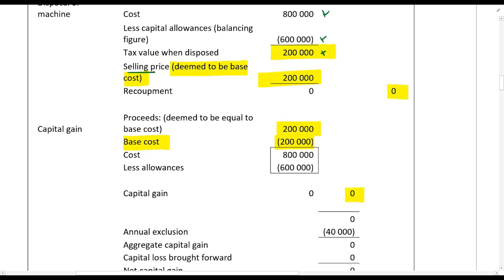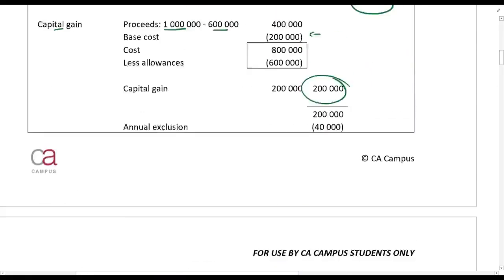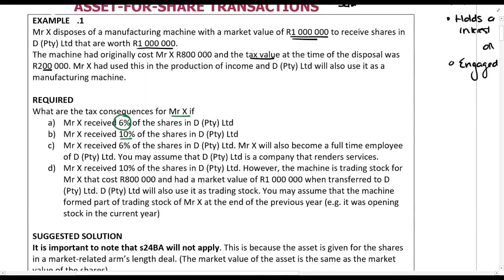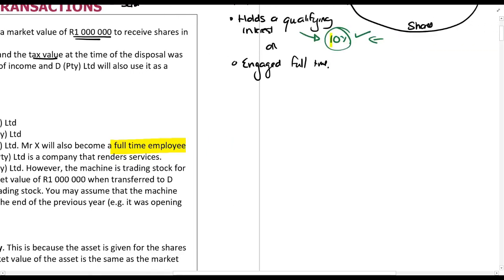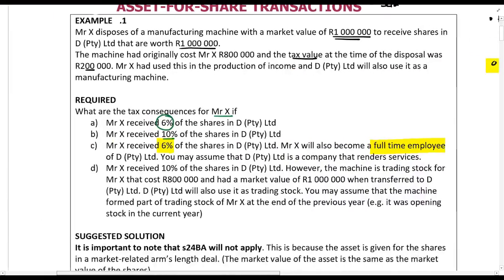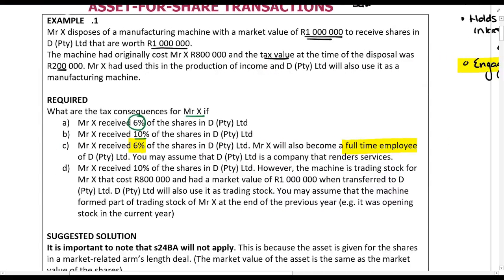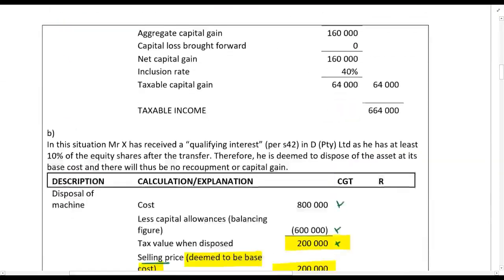Comparing parts A and B: in A there is a 600,000 recoupment and a 200,000 capital gain; in B there is nothing. In part C, Mr. X received six percent of the shares but will also be a full-time employee of DP to I Limited. He has less than ten percent but is engaged on a full-time basis, so the same principle as in B applies — nothing gets calculated.